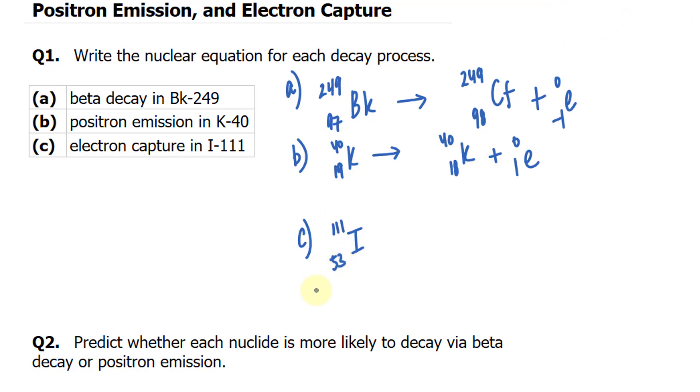and the mass number remains unchanged. And because an electron is being captured, we write down electron on the left side of the equation. And as mentioned, 53 will become 52. That's the 52nd element. That's tellurium. And the mass stays as 111.